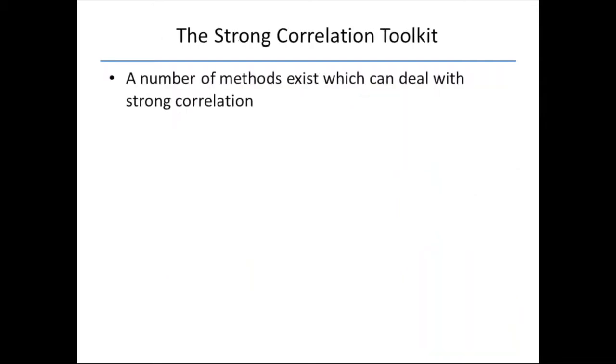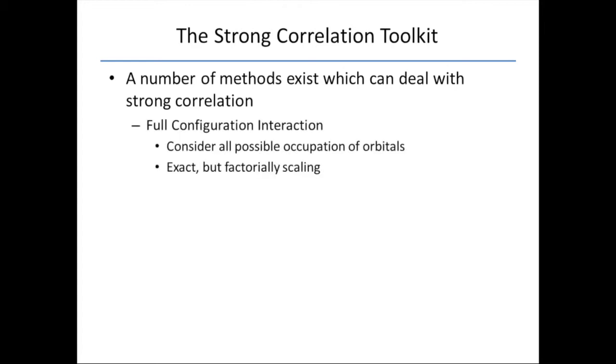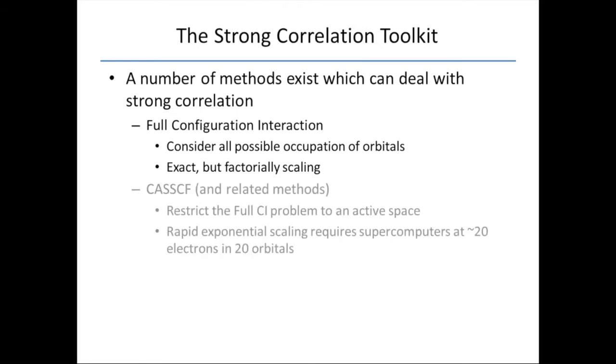What methods do we have for dealing with this? The simplest thing is full configuration interaction or full CI. Basically, you consider all possible occupations for your orbitals and diagonalize this big Hamiltonian. That's great. It's exact, but it is factorially scaling. So it's pretty much only amenable to the very smallest systems.